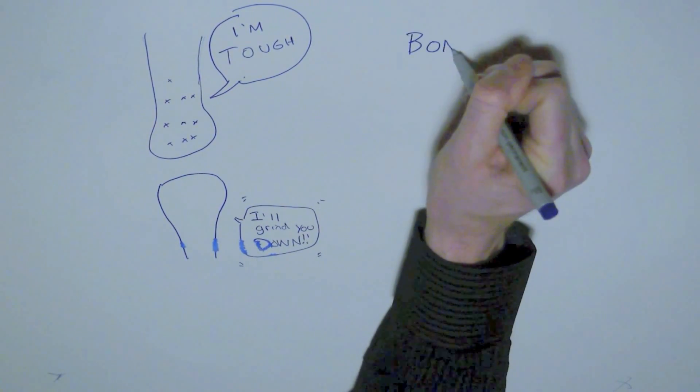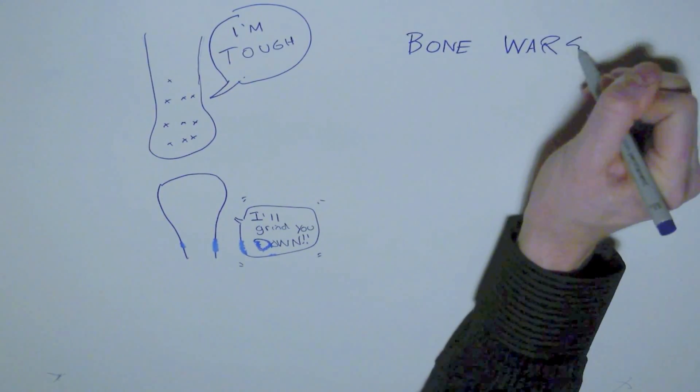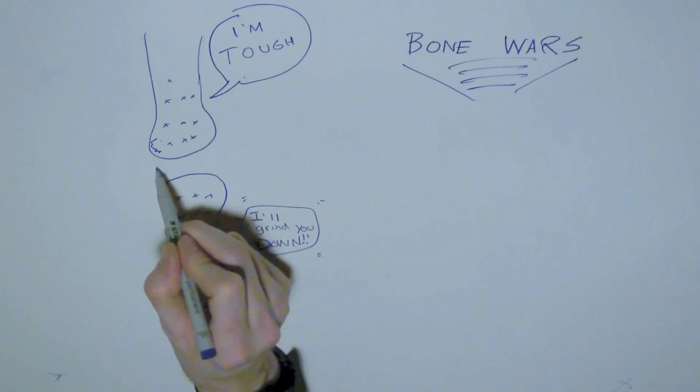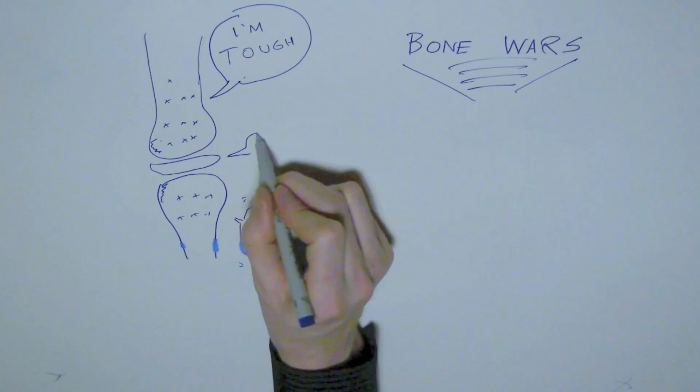So we have, fortunately, between these bones, something called cartilage, and it's the peacemaker. It keeps these bones from fighting and just smooths everything out, right?